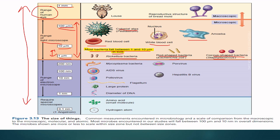Some bacteria that don't have a cell wall, like Mycoplasma, cannot be seen by the light microscope because their size is in the nanometer range. We have to see Mycoplasma and all viruses by the electron microscope, because their range is in nanometers — from 1 nanometer to 200 nanometers. Now, how do we convert nanometers, micrometers, and millimeters into meters?